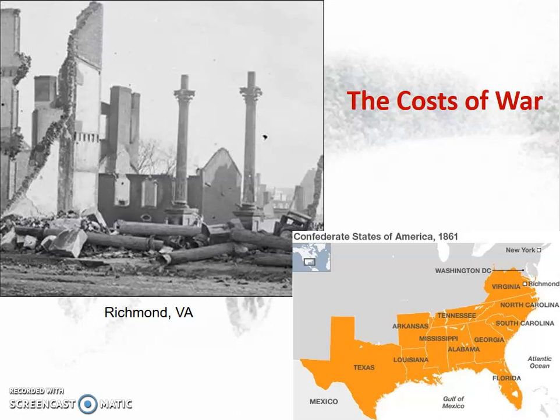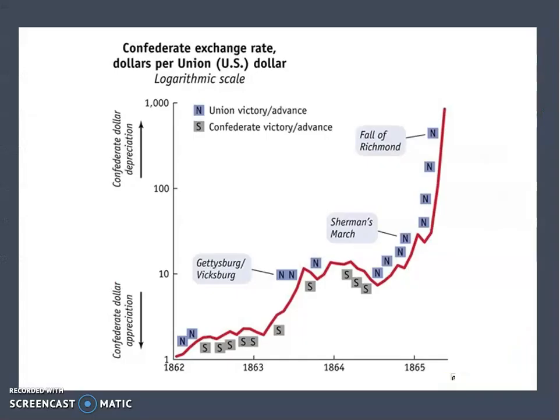The physical devastation — the loss of port facilities, warehouses, railroad lines to transport goods from one place to another — also increased the economic effects of this war. You can see from the graph on the slide that the currency printed by the Confederate States during the conflict lost its value as a Union victory approached by 1865.